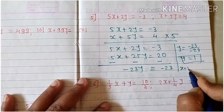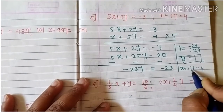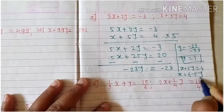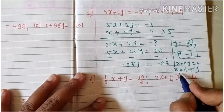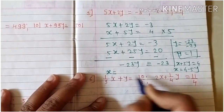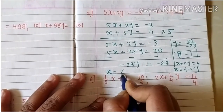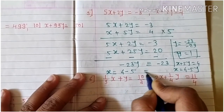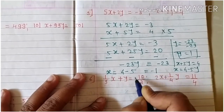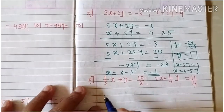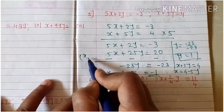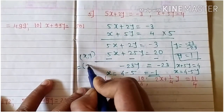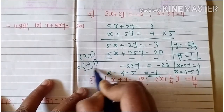Substitute y equals 1 into equation two: x plus 5y equals 4, so x equals 4 minus 5y equals 4 minus 5 equals minus 1. The solution is x equals minus 1 and y equals 1.